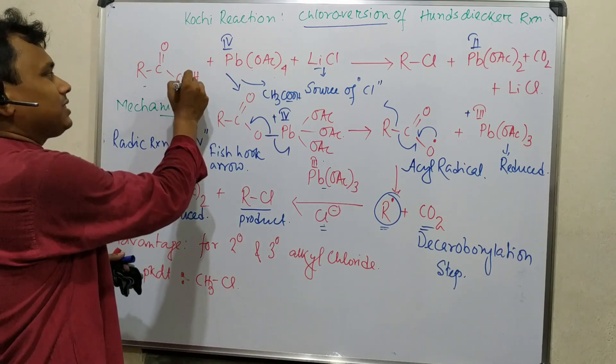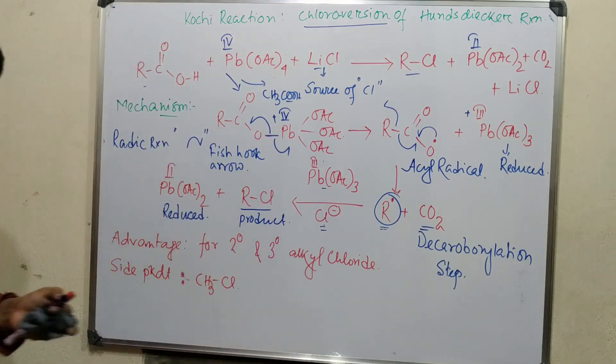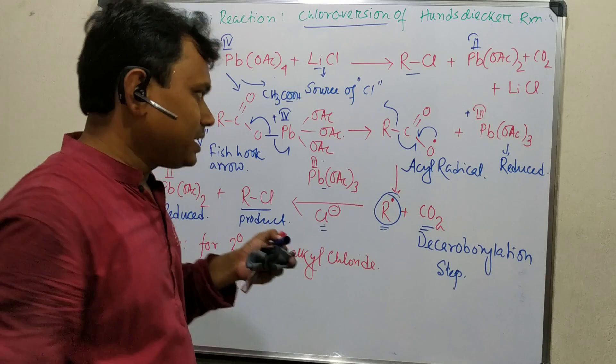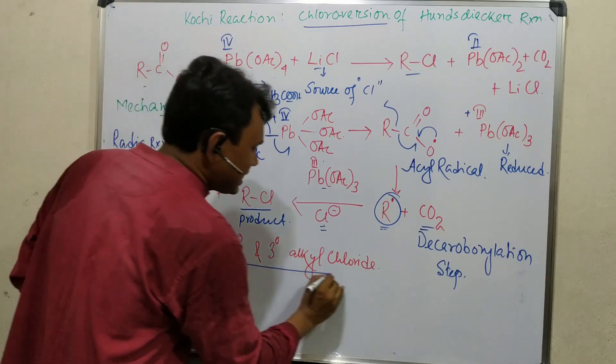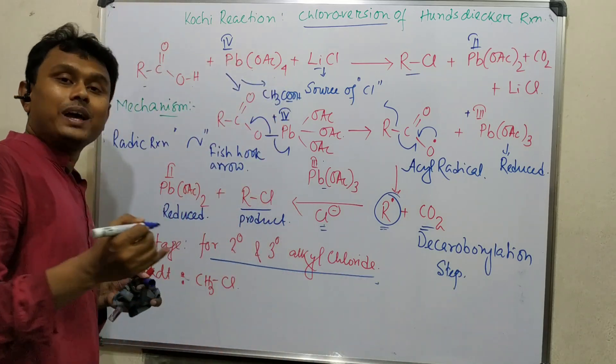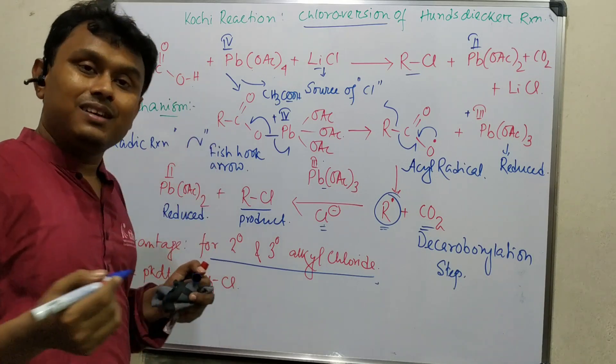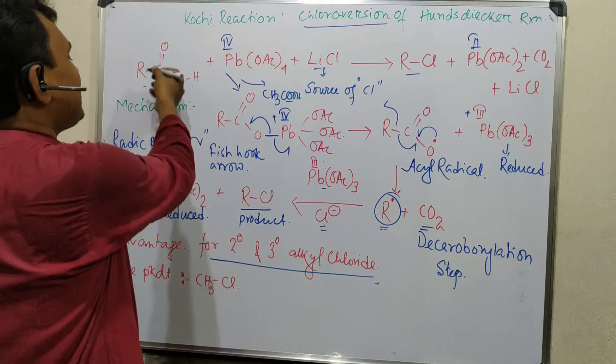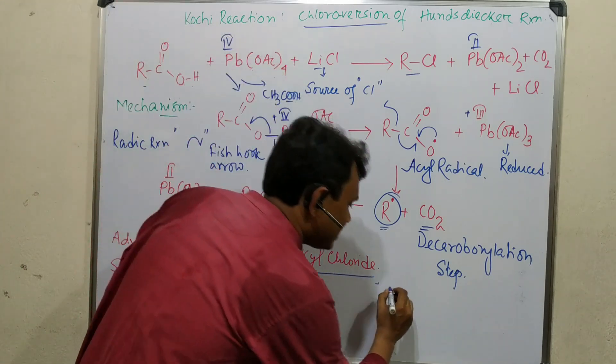In this way, we go from carboxylic acid to alkyl halide. What is the advantage of this reaction? The mechanistic course is not completely understood. The advantage is that this is very good for secondary and tertiary alkyl halides, which are generally difficult to prepare. This reaction can provide these better because the radical is stable, as radicals are stabilized by hyperconjugation.